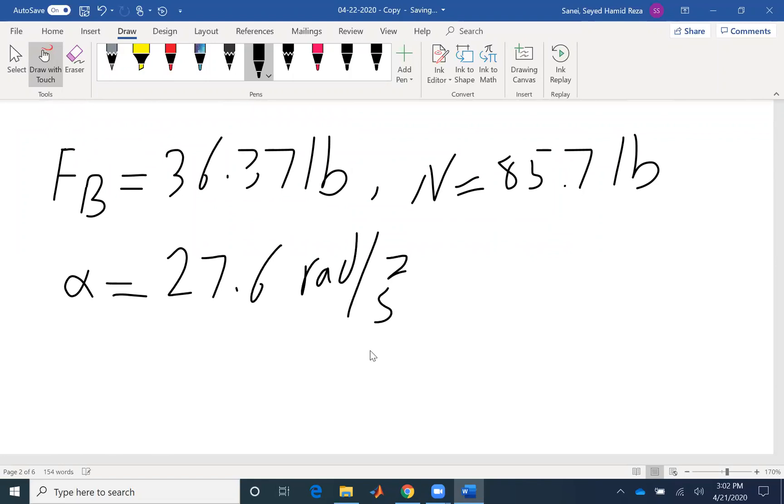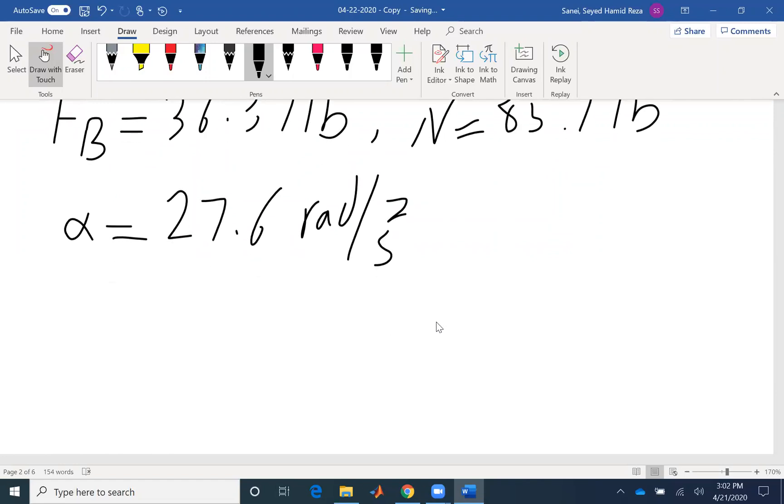But the question is not asking for alpha. The question is asking for the time that it takes for disk E to reach the same angular velocity as disk D. I can write the kinematic equation because I have a constant angular acceleration. It starts from rest, so the initial angular velocity would be zero.